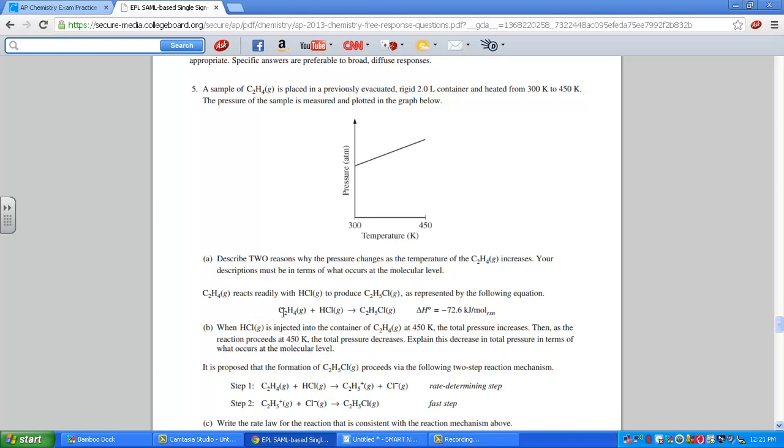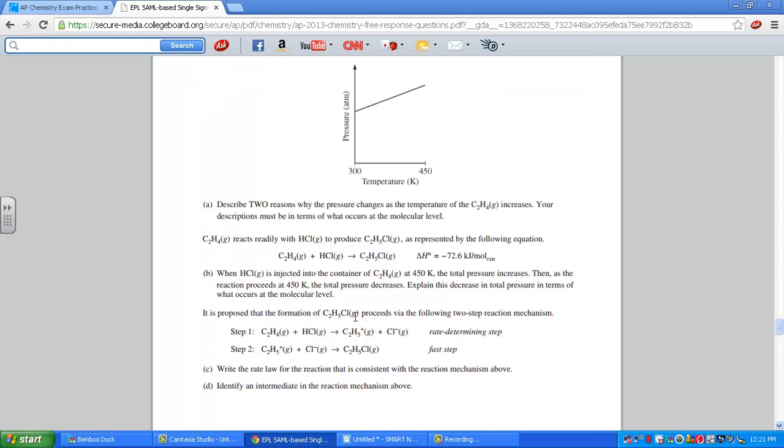Letter B. Here we have an equation. C2H4 in a gaseous form with HCl gas is producing another molecule, C2H5Cl. Here, notice delta H is negative KJs per mole for the reaction, so this is an exothermic process. When HCl gaseous form is injected into the container at 450 Kelvin, so right about here we are putting in another molecule,